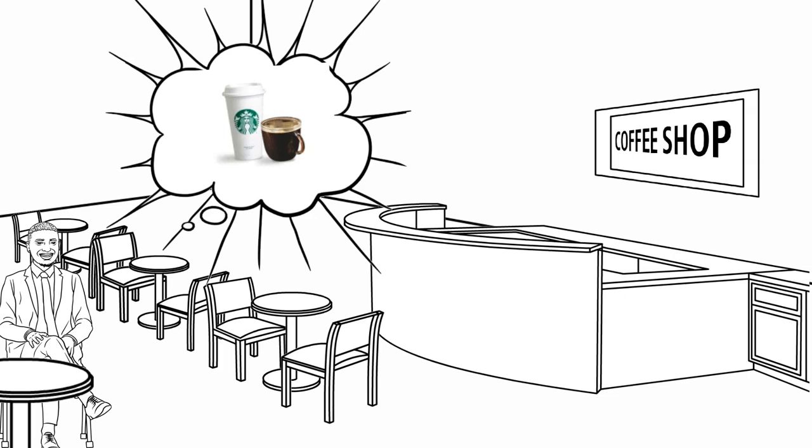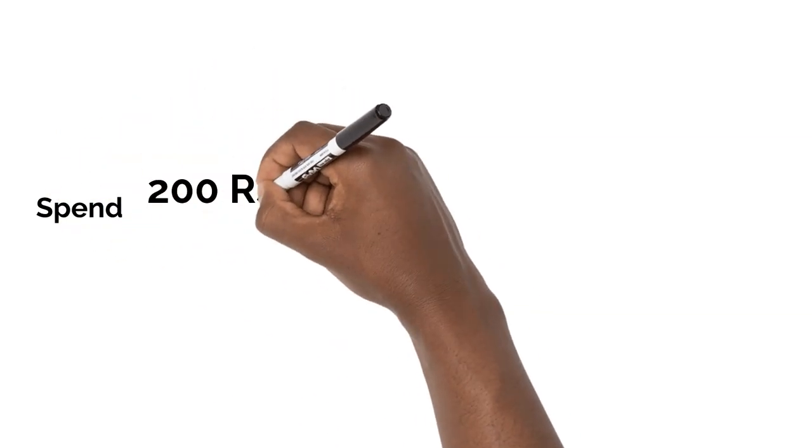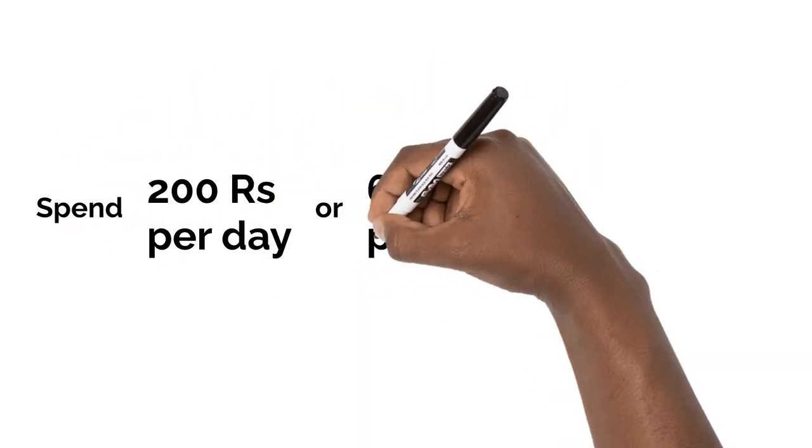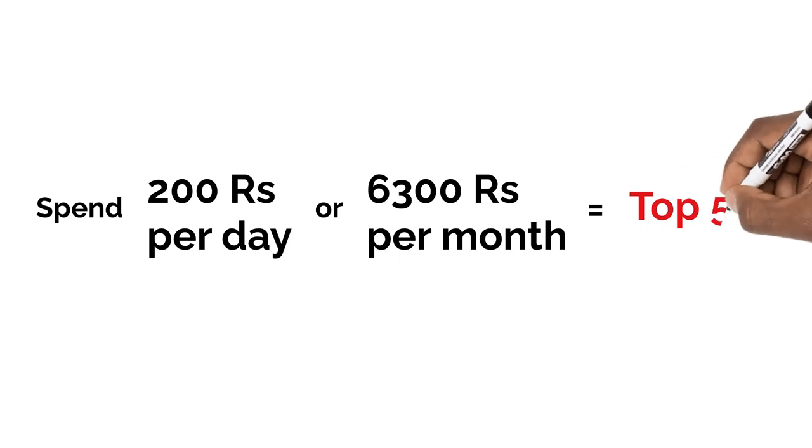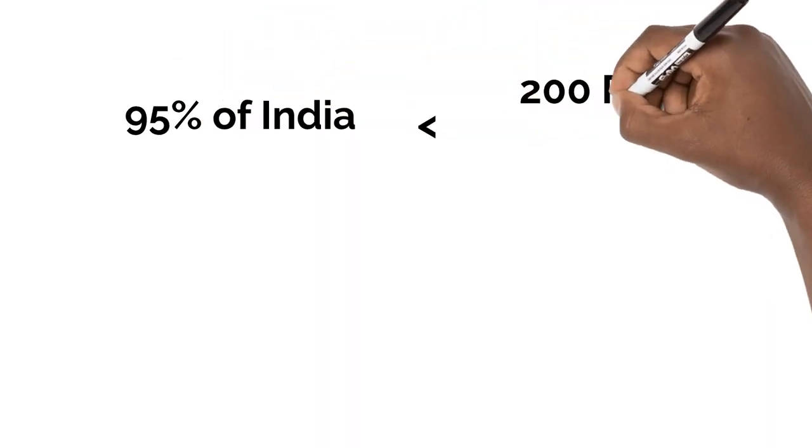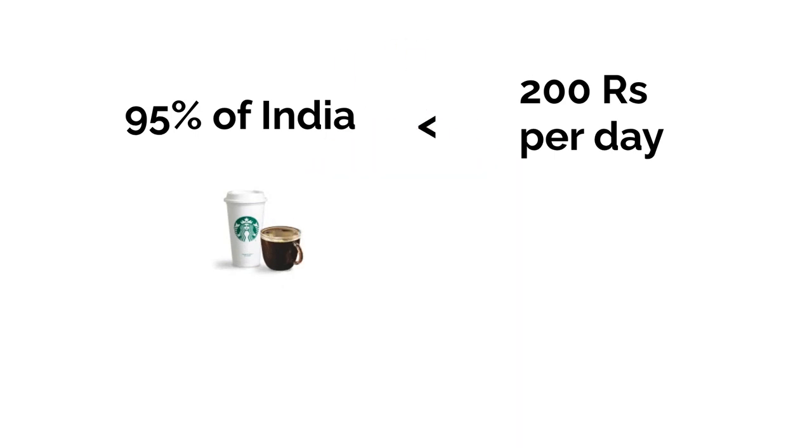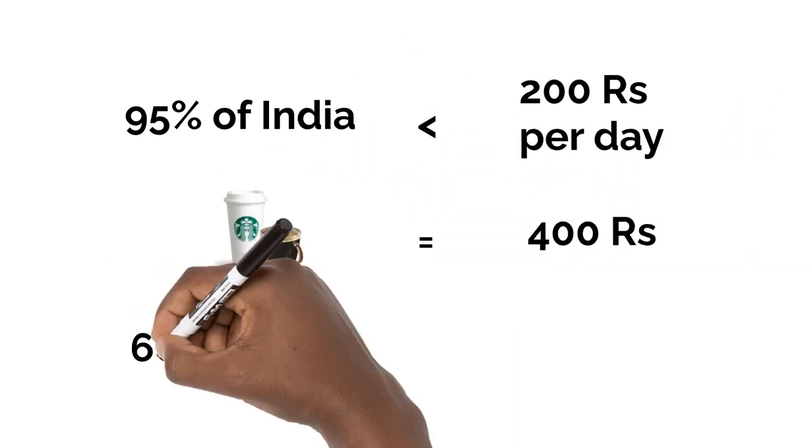According to government data from 2012, which is the latest data we could find, if you live in a city and spend more than 6,300 rupees per month, you're in the top 5% of this entire country. That's only about 200 rupees per day for everything. So if 95% of this country spends less than 200 rupees a day, where does this idea of a 600 million strong middle class that can buy 400 rupee coffee from Starbucks come from?